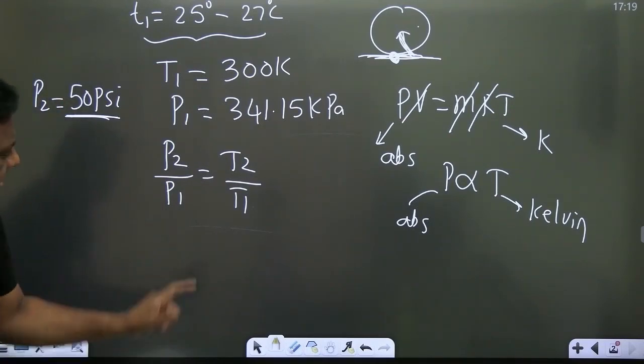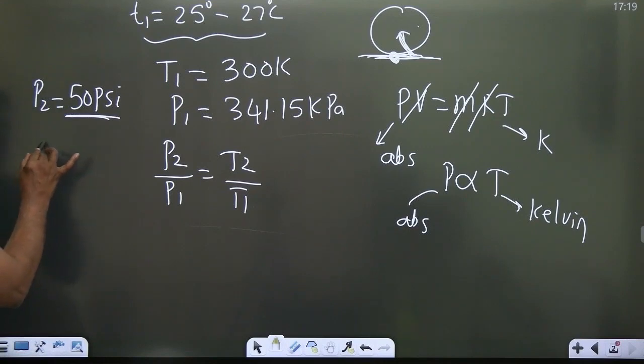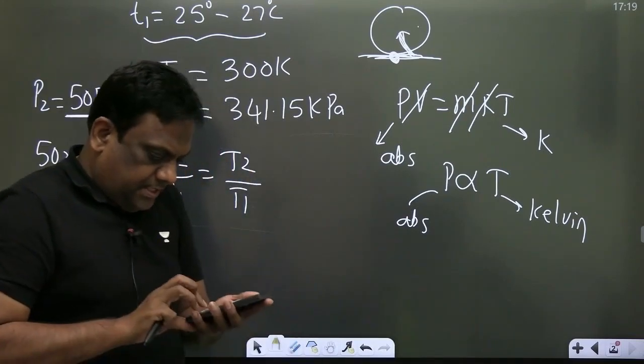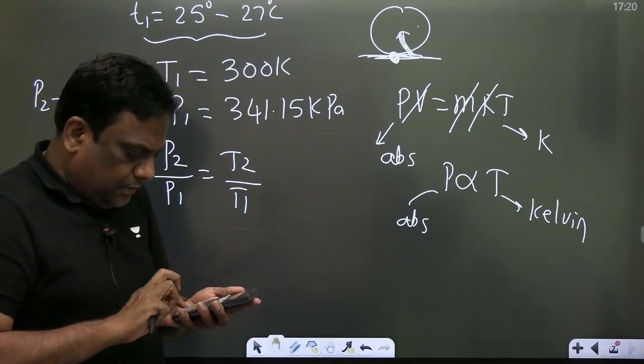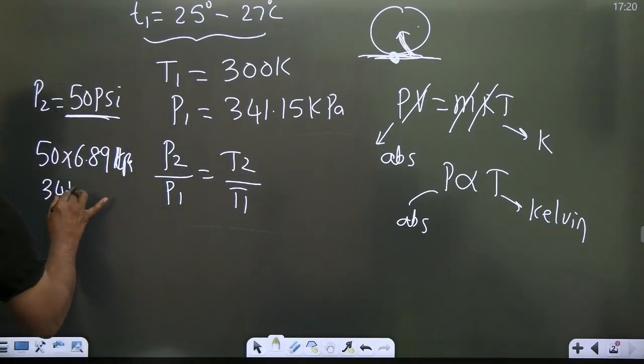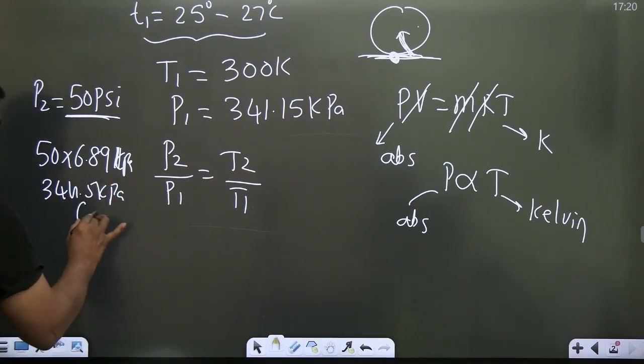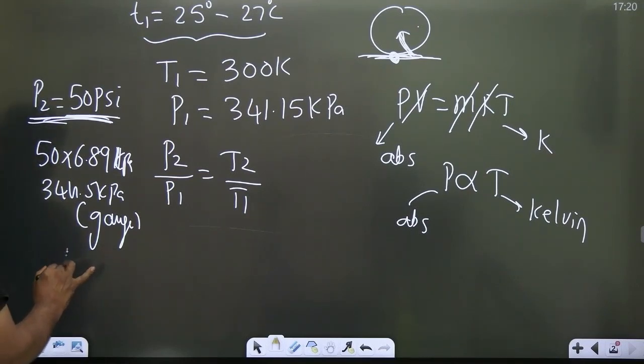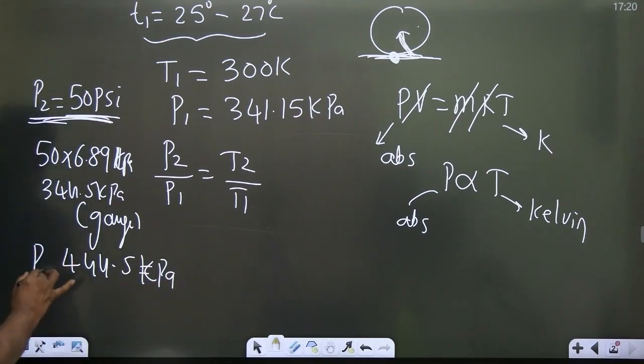Let me convert this in absolute kilopascal. 50 into 6.89 kilopascal, this will be 344.5 kilopascal. But this is gauge. Convert in absolute, add 100, so 100 kilopascal, and this turns out to be 444.5 kilopascal. So this is my final pressure.